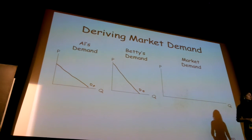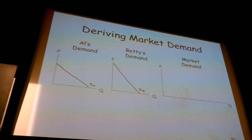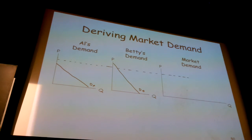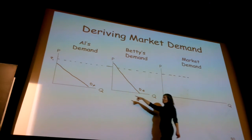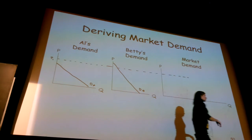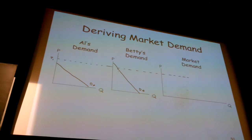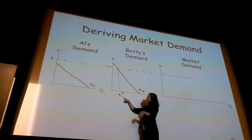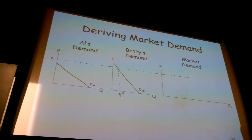So how do we figure out market demand? Well, we start off at a given price and figure out what's the total quantity demanded in the market at that price. At price P1, how much does Al demand? Al demands zero. How much does Betty demand? She demands Q1 sub B — meaning Betty's quantity when the price is at P1. The market demand is then just simply whatever Betty does.